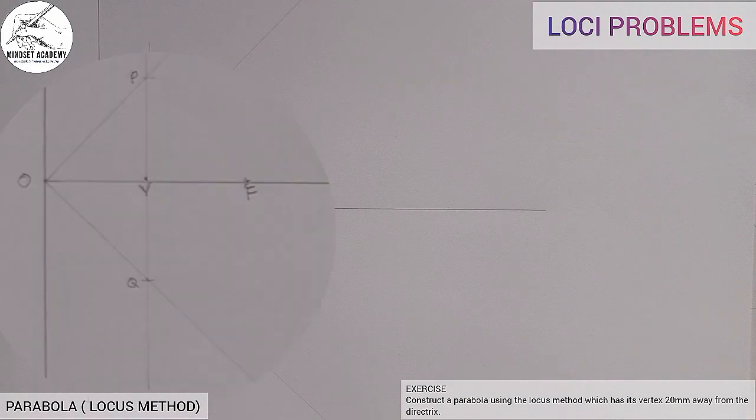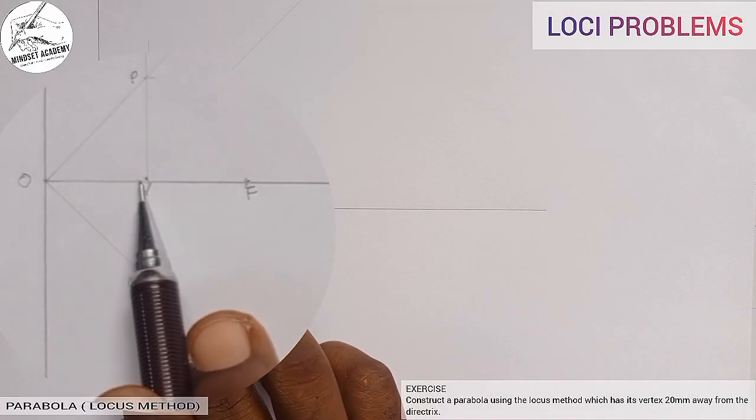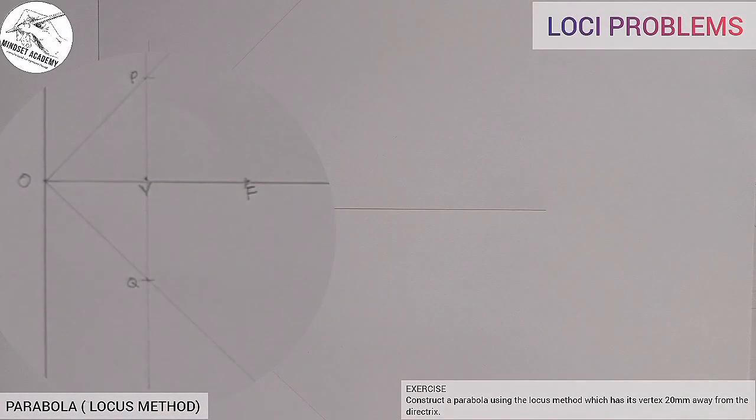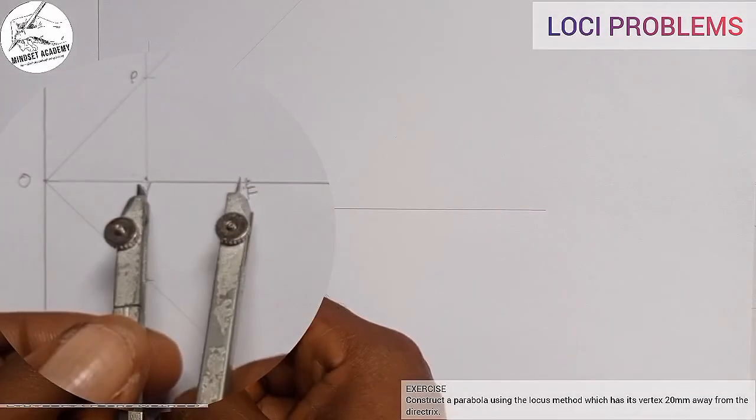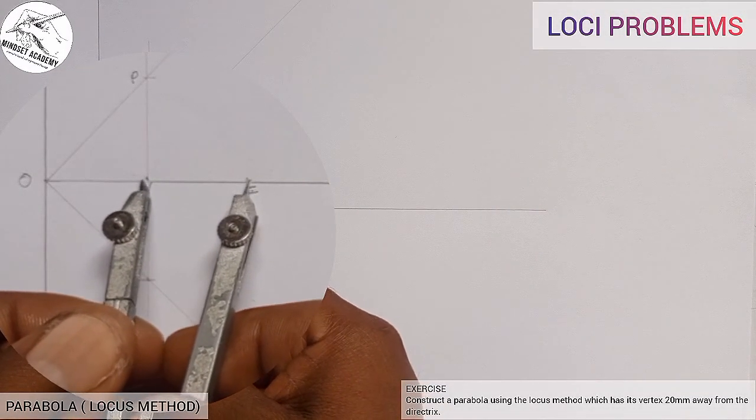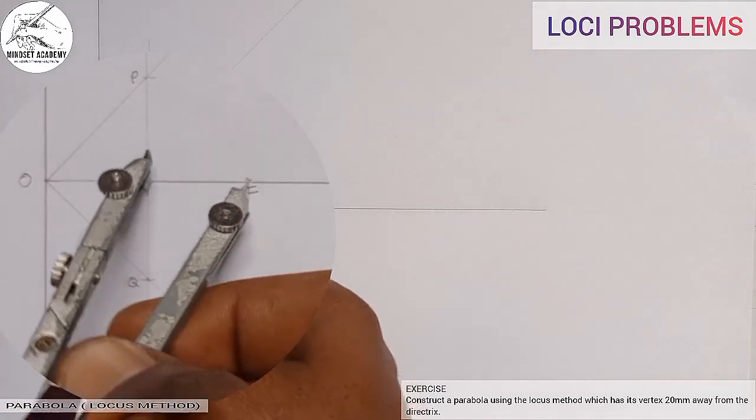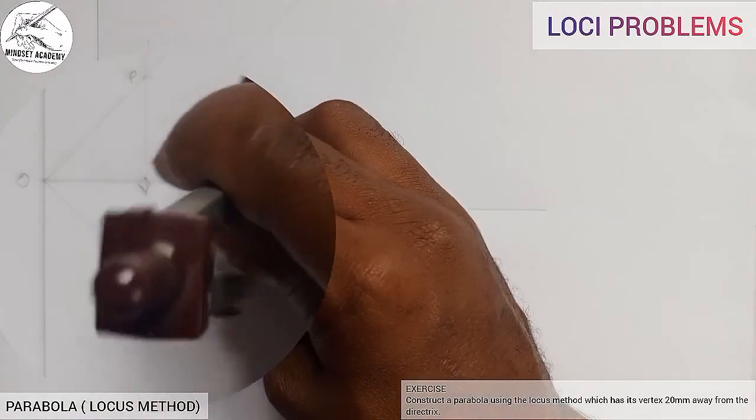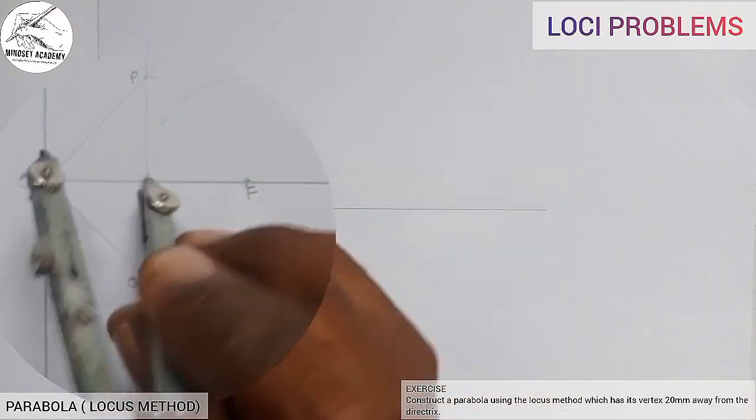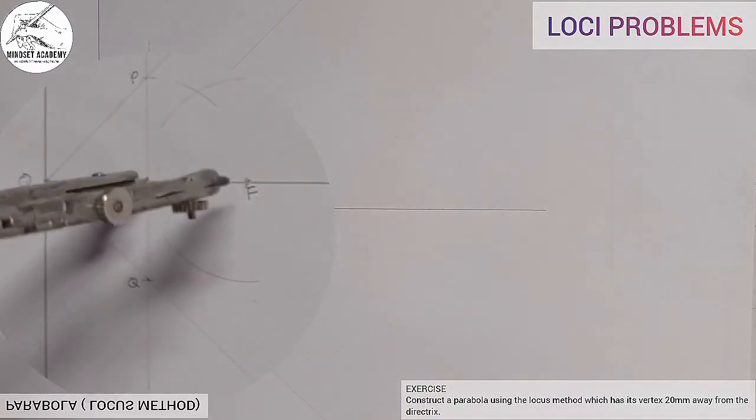Now the next thing I am going to do is I will bisect the vertex and the focus to get my point 1. So what I will do is place my compass in this manner between the vertex and the focus, and I am going to strike an arc up and down. With the same radius, I will place it at the vertex and strike an arc up and down.